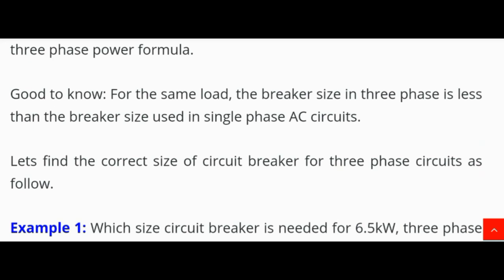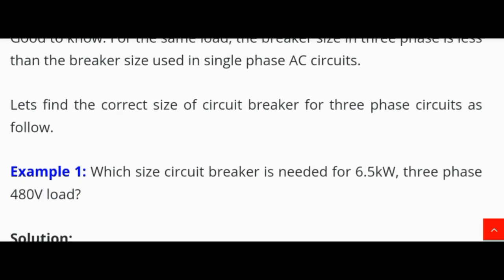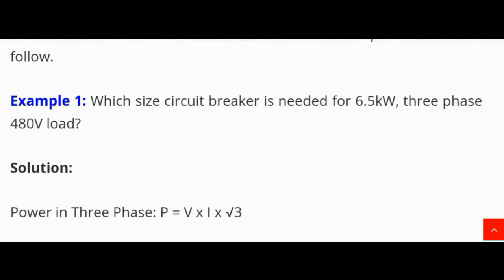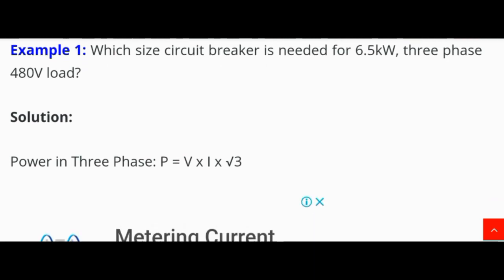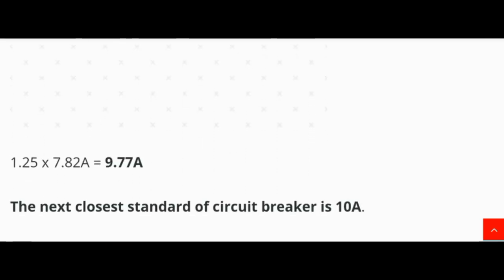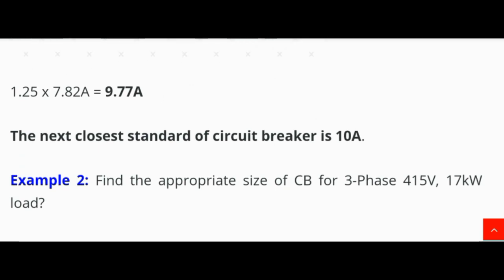Good to know: for the same load, the breaker size in three phase is less than the breaker size used in single phase AC circuits. Example 1: Which size circuit breaker is needed for a 6.5 kilowatt, three phase, 480 volt load? Solution: Power in three phase: P = V × I × √3. Solving gives I = 7.82 A. Then: 1.25 × 7.82 = 9.77 ampere. The next closest standard circuit breaker size is 10 ampere.